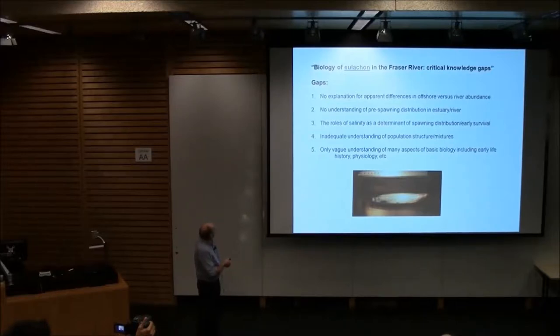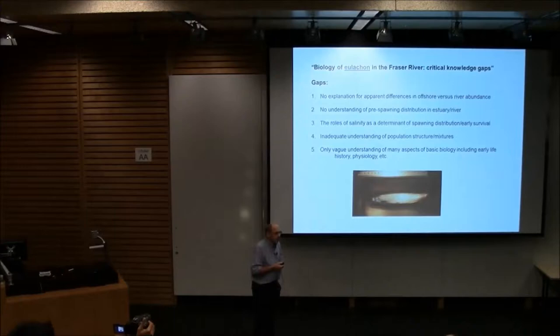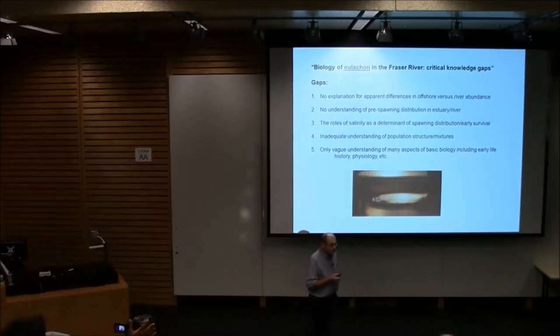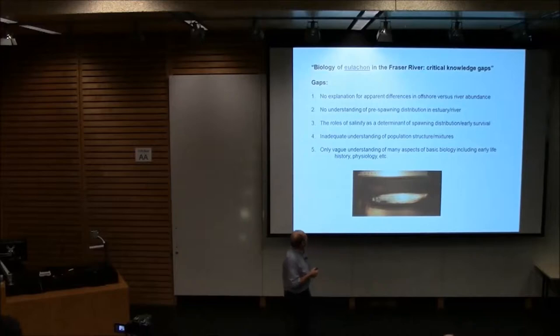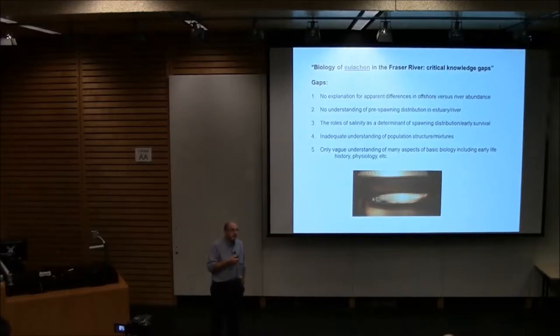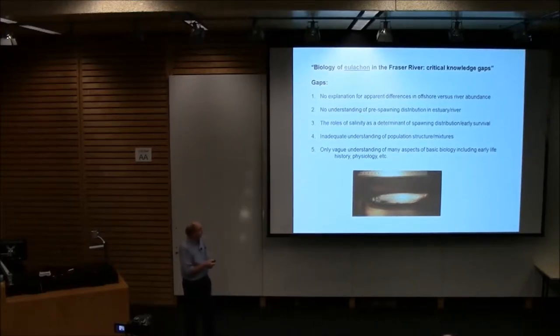There's no understanding of the pre-spawning distribution of hooligans in the estuary river, and that's really quite important for the Fraser because the proposed developments there are stunning. There's coal terminals expanded, terminals for loading cars. The province is going to increase the height of the levees, and it's the near shore environment in the Fraser where they're spawning. So that's one of the other gaps.